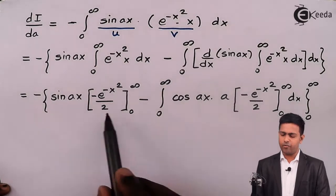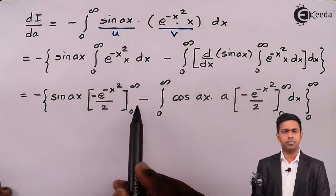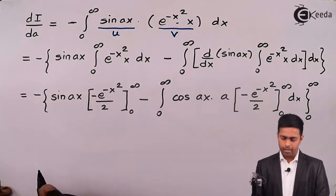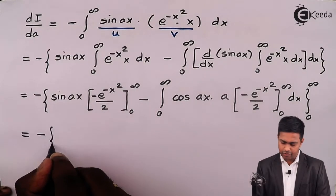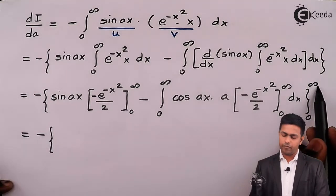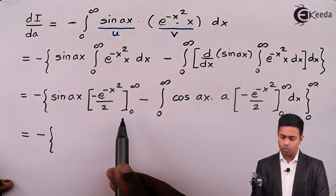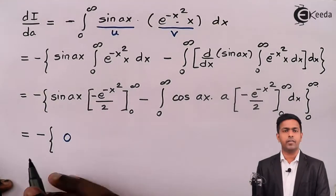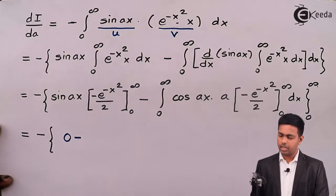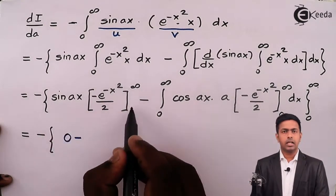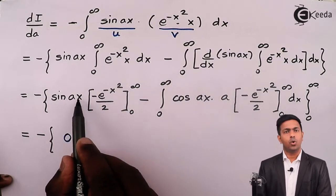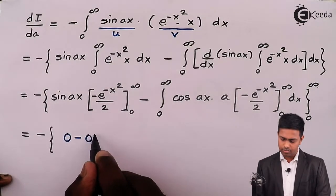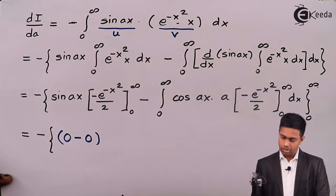Now we evaluate by applying the limits 0 to infinity on the first term. The minus sign stays as is. Looking inside the curly bracket: when we put infinity in the first term, e^(-infinity) = 0, so the first term becomes 0 for the upper limit. For the lower limit 0, sine(0) = 0, and 0 times anything is 0. So the first term gives us 0.